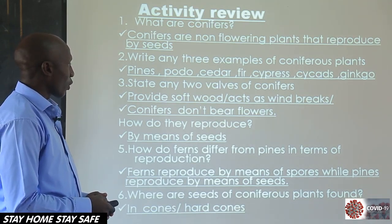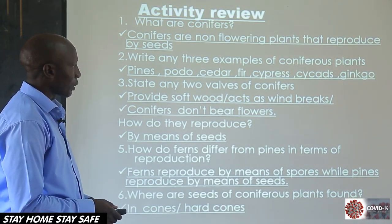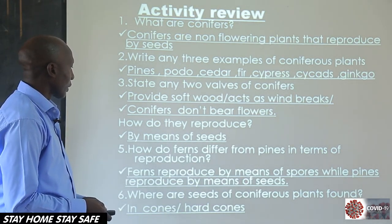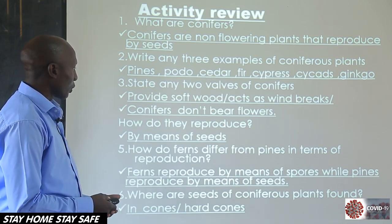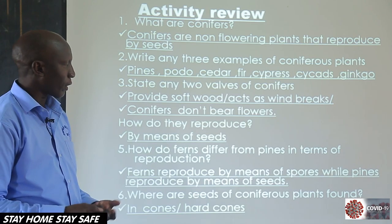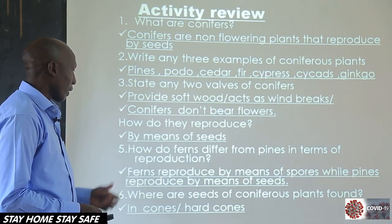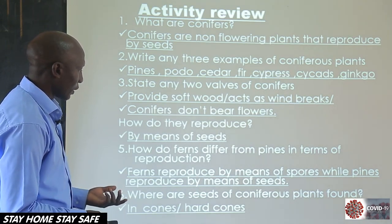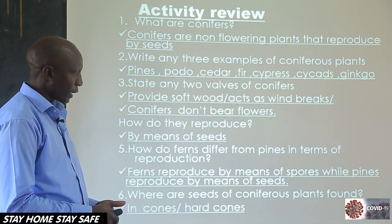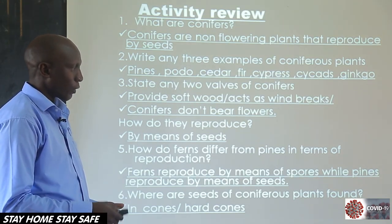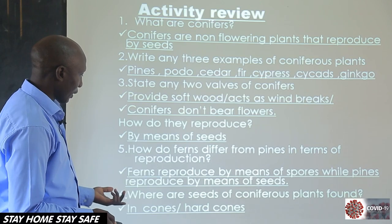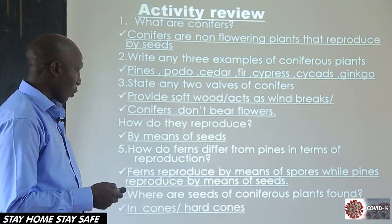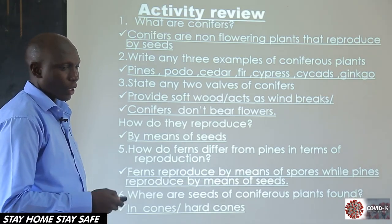Question three: state any two values of conifers. We said conifers provide softwood timber and they act as windbreaks. Question four: how do they reproduce? We said conifers, being non-flowering plants, reproduce by means of seeds. Question five: how do ferns differ from pines in terms of reproduction? Ferns reproduce by means of spores, while pines reproduce by means of seeds — remember, a pine is a coniferous plant. And lastly, where are the seeds of coniferous plants found? We said they are found in structures called cones. Hope you got them right.